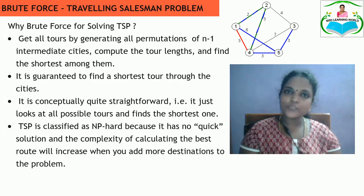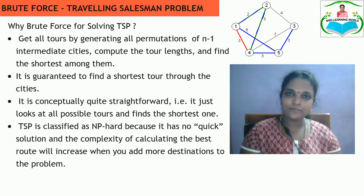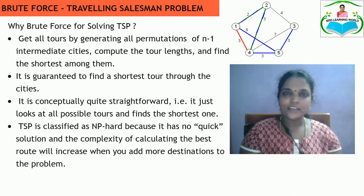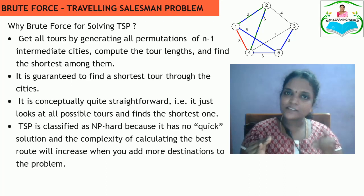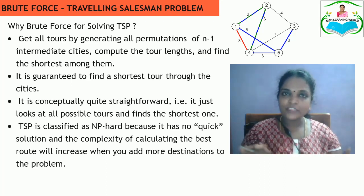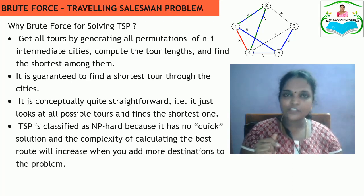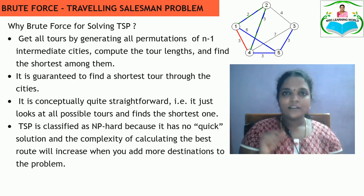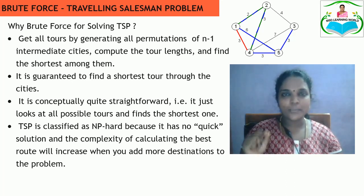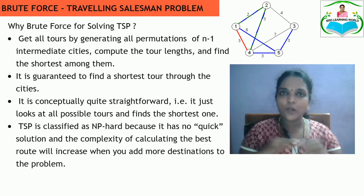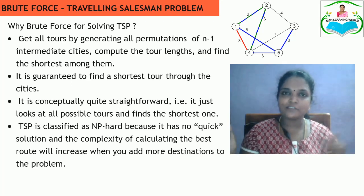Why use the brute force approach for the Travelling Salesman Problem? When using this approach, there is a possibility of finding all the permutations of n minus 1 intermediate cities the person can reach from source to destination. From all available path distances we can select the optimal path with the least distance. There is also a guarantee that an optimal solution is found, since this method finds all possible paths.